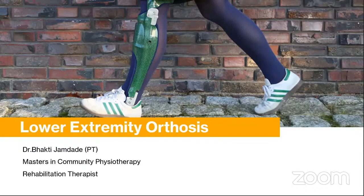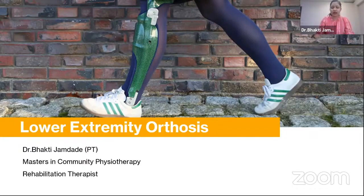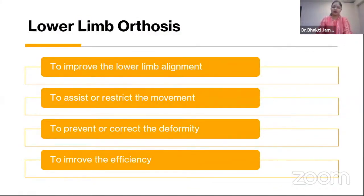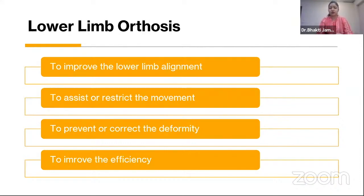Hello everyone. Today we'll see lower limb orthosis in depth. In the last lecture we covered the overview of orthosis, where we saw the different types of orthosis, the goals of prescription, and the considerations we have to take while prescribing. Today we'll see lower limb orthosis, the different types, and their assessment and prescription criteria. Lower limb orthosis can be used to improve lower limb alignment, assist or restrict movement, and help prevent or correct deformity and improve efficiency and function of the patient.